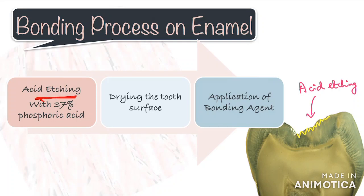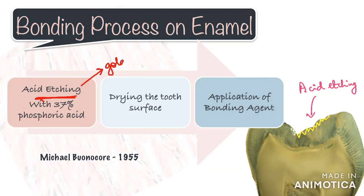When we want to bond a restorative material on enamel, the process is something we do on a daily basis, and that is acid etching. For this we need to give credit to Michael Buonocore, who in 1955 developed a technique to improve bonding on enamel. This was based on an industrial technique that improved the adhesion of paints on metal surfaces. He discovered that 85 percent phosphoric acid changes the enamel surface and makes it more suitable for mechanical adhesion. Even today, the technique of etching the enamel surface is considered the gold standard for bonding resin-based materials to tooth structure.